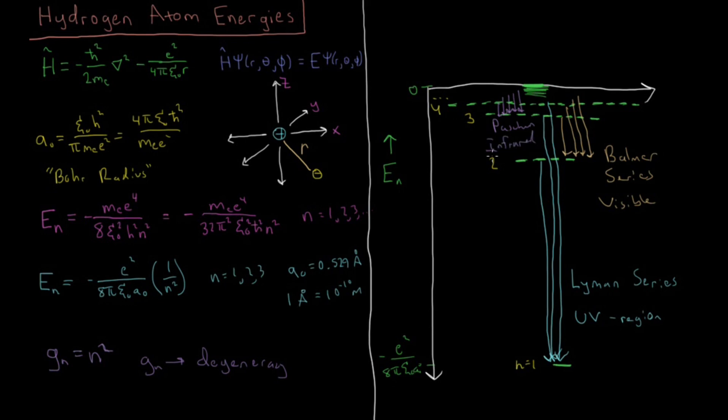So you can see there's a wide variety of transitions which are possible because there's a wide variety of the energy spacings which are possible given these various values here.